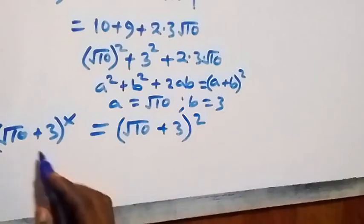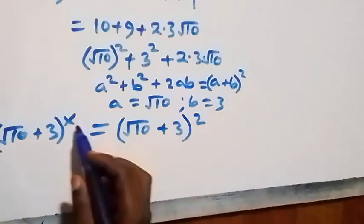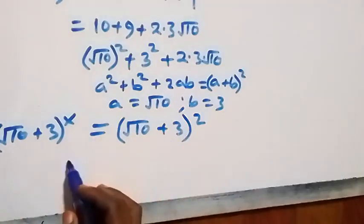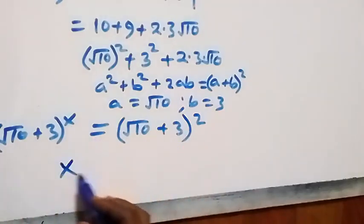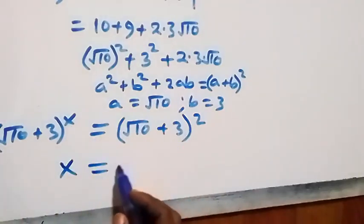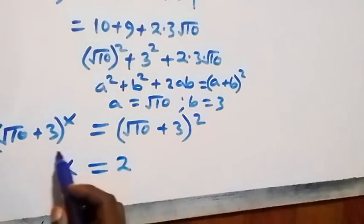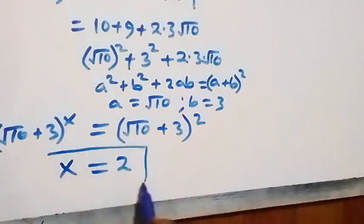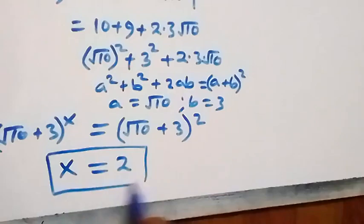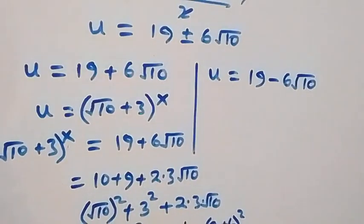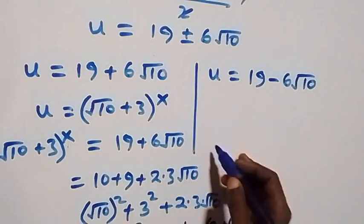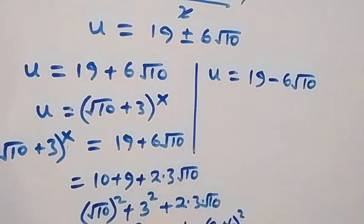Since we have the same base on both sides, we can equate the exponents, giving us x equals 2.